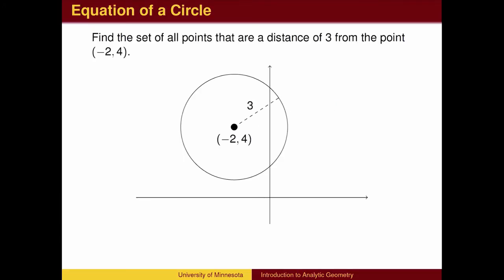Here is another example, the equation of a circle. We wish to find all points on a circle of radius 3 centered at the point (-2, 4). We label an arbitrary point on the circle.